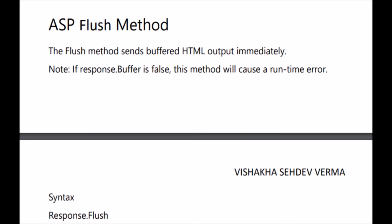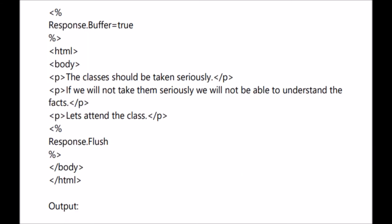The next method is the ASP flush method. The flush method sends the buffered HTML output immediately. Note: if response.buffer is false, it will show a runtime error, because if the property is false there will be no buffered HTML output, and so there is nothing to send — this method will cause a runtime error. The syntax for this method is response.flush.